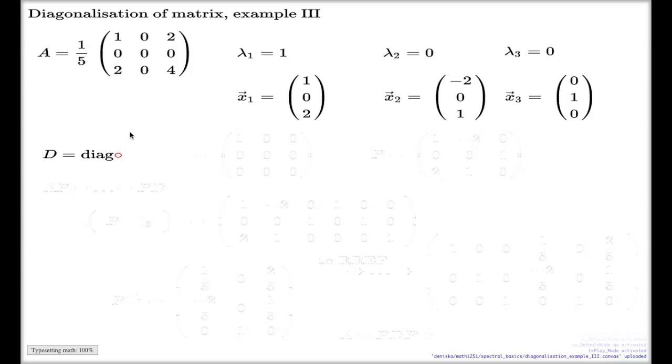My D will be this diagonal matrix. You see I duplicate my zero eigenvalue. If you want to see the conventional look of the D matrix, it's a very simple matrix. It has only one non-zero entry like this. The rest of the entries are simply filled with zeros. But it's still a diagonal matrix.